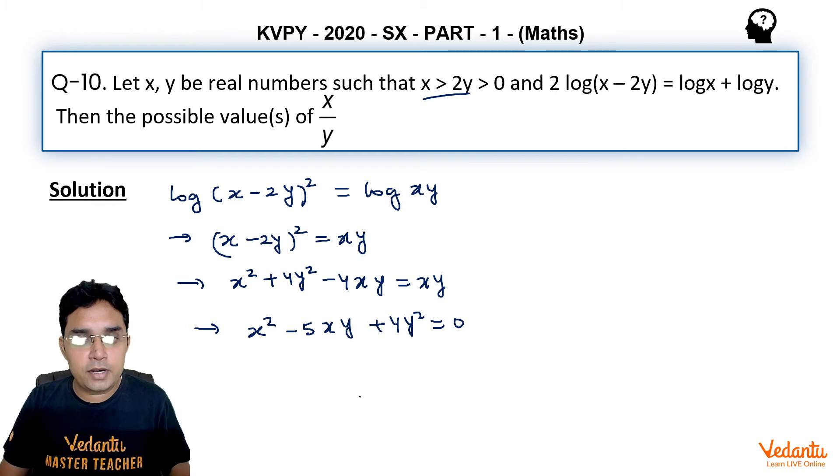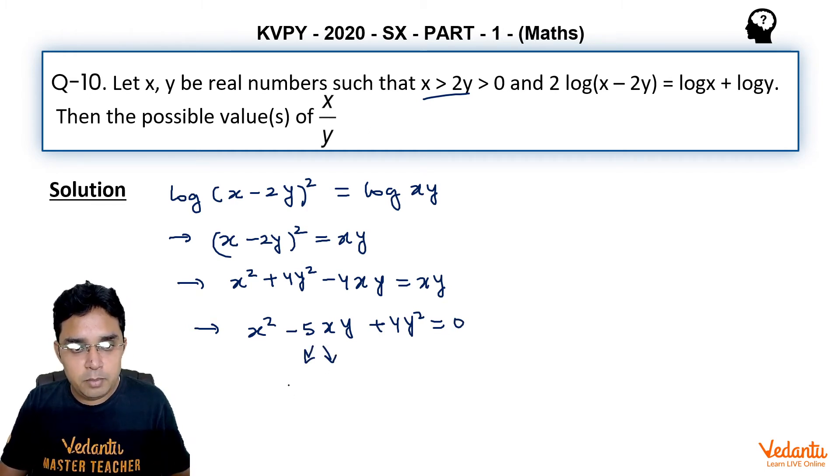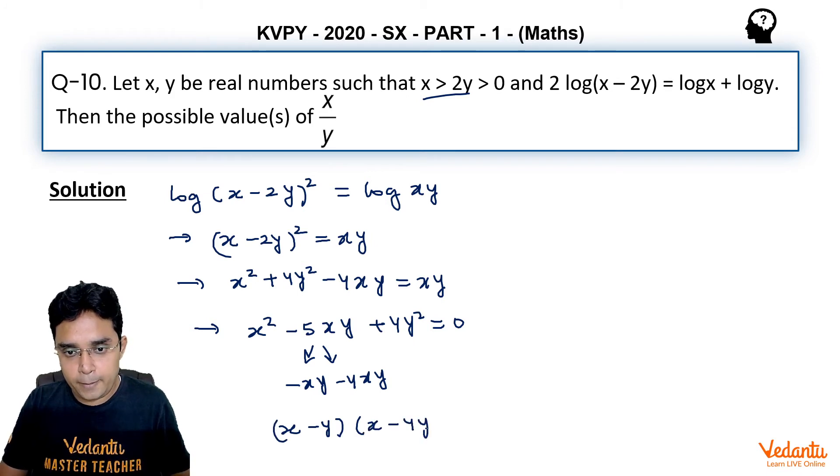This can be easily factorized by splitting the middle term. I can write 5xy as xy + 4xy. Then the factors are (x - y) and (x - 4y), so (x - y)(x - 4y) = 0.